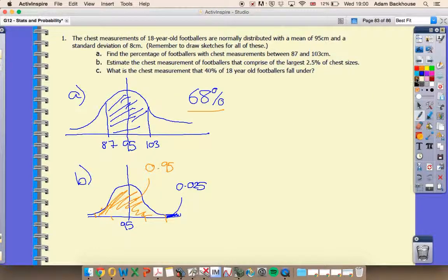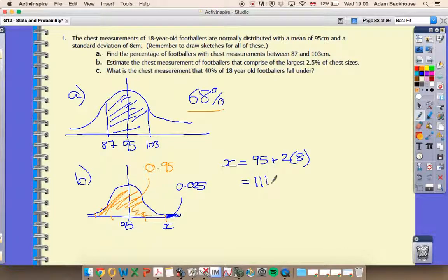So that tells me that this value here, let's mark it X, must be two standard deviations above the mean. So two lots of our standard deviation, so 111 centimeters. So first look at an inverse normal problem, but because we didn't have to really calculate anything, it was fairly painless.